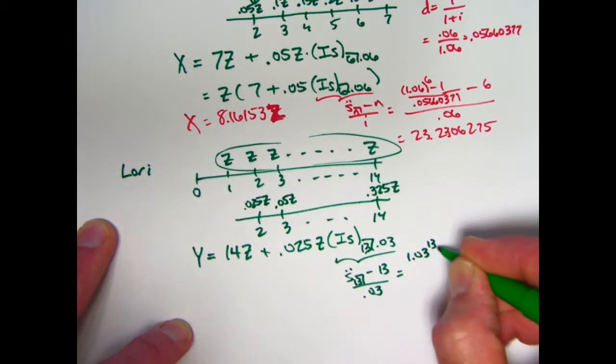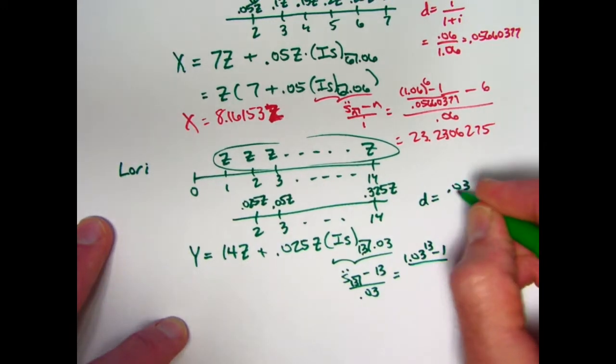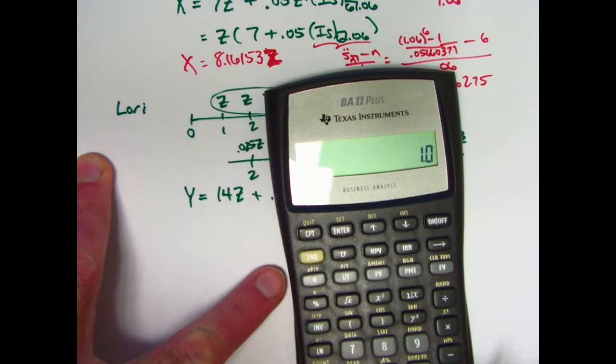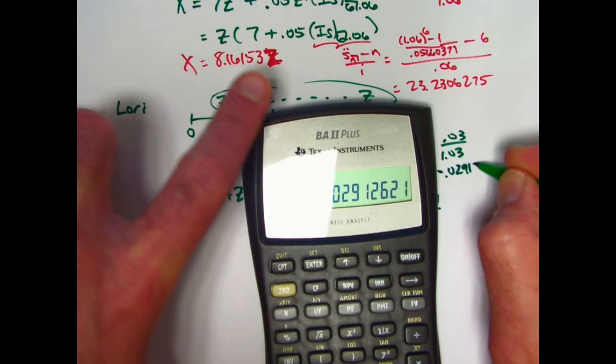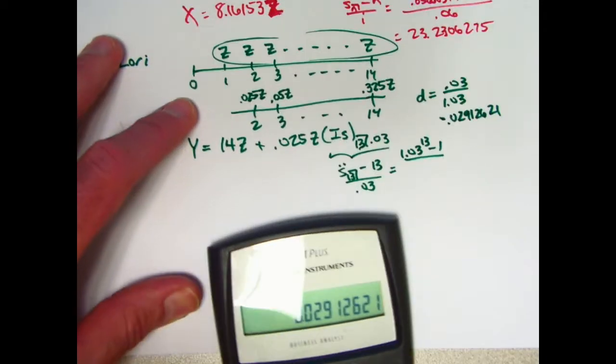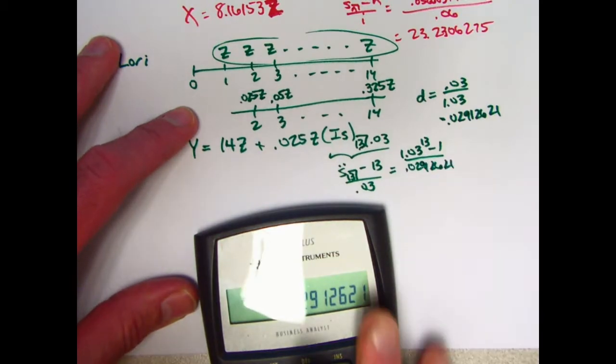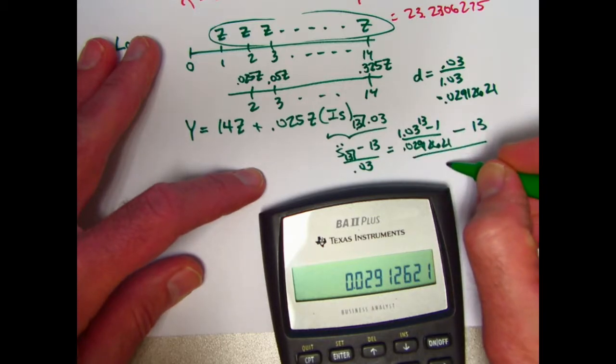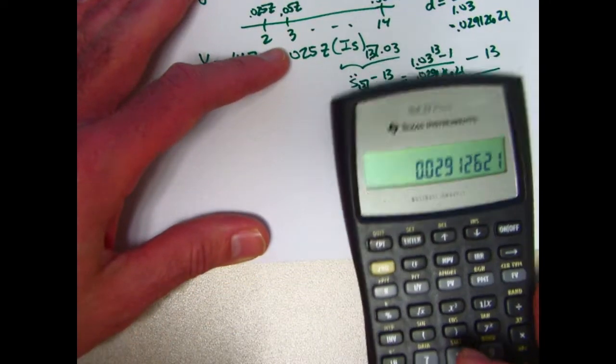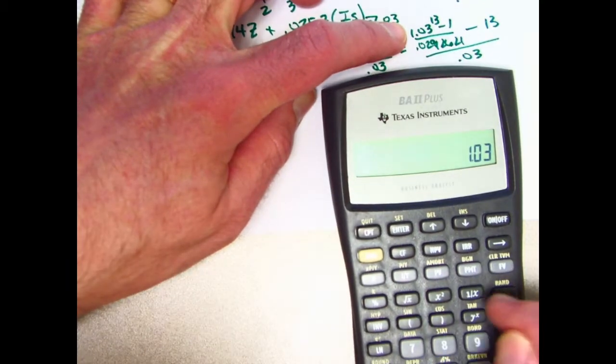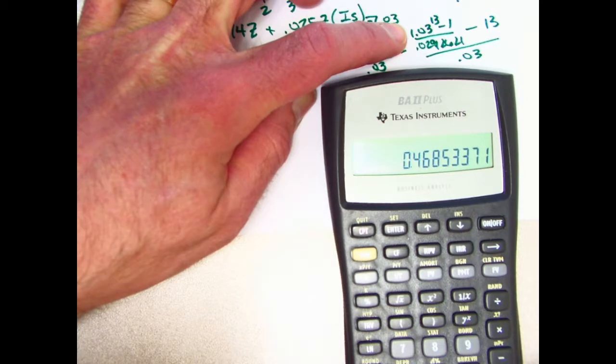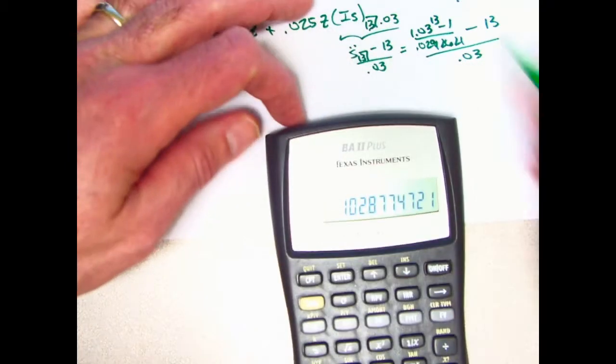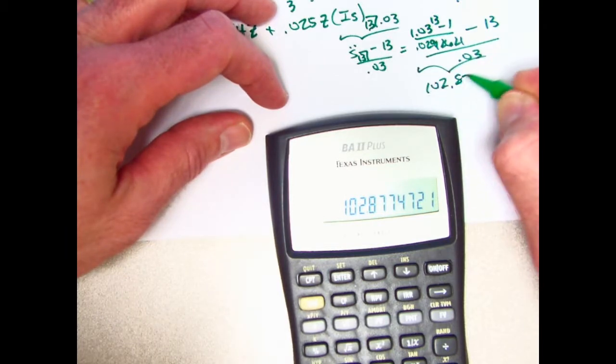This quantity is going to be S13 double dot minus 13 divided by 0.03. It'll be 1.03 to the 13th power minus 1. What is the D, the discount rate for this situation? 0.03 divided by 1.03 - D is 0.02912621. That's what goes here. I'm going to store that in register 0. Subtract N, which is 13, divide by I, which is 0.03. Let's see what this ends up being. Take 1.03 to the 13th power, minus 1, divide by what's in register 0, subtract 13, divide by 0.03. This quantity is 102.8774721.